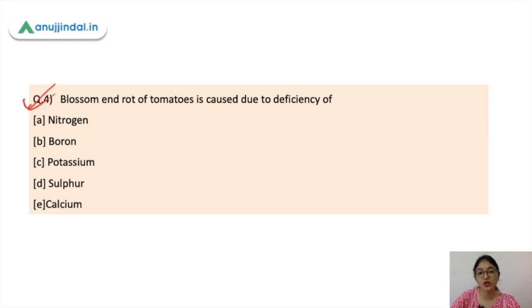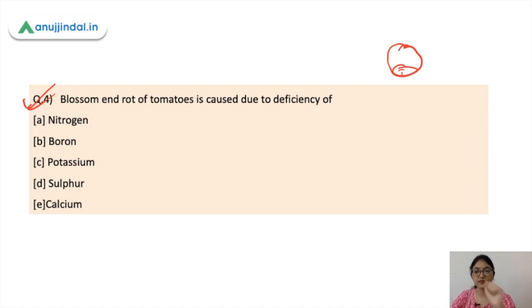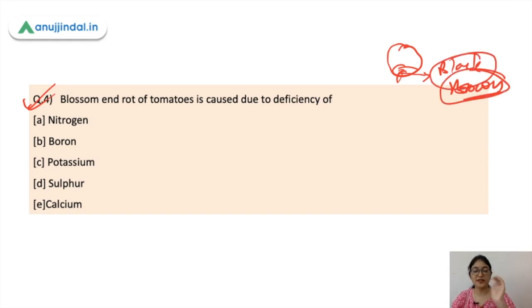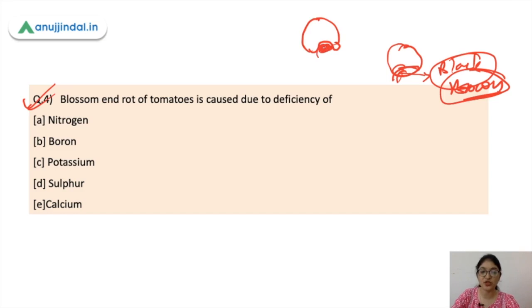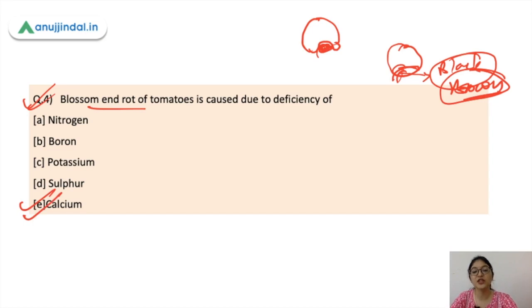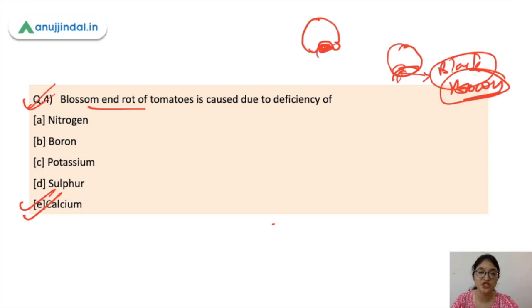The next question is: blossom end rot of tomatoes is caused due to the deficiency of what? Sometimes you will see a depression at the end of the tomato — a black or brown color — and it starts to deteriorate. The tomato loses its round shape. This disease is called blossom end rot of tomatoes, and it is mainly due to the deficiency of calcium — either as a nutrient deficiency in the soil or related to water and irrigation issues.